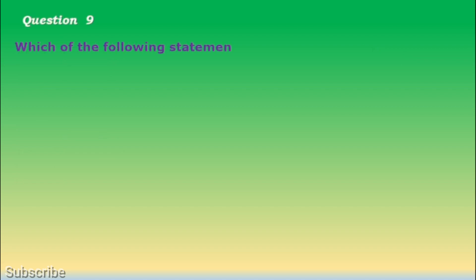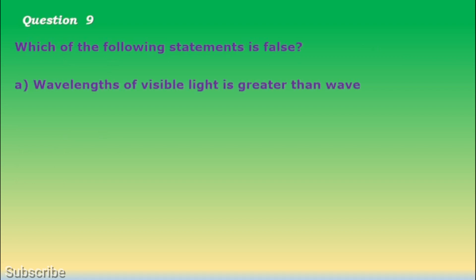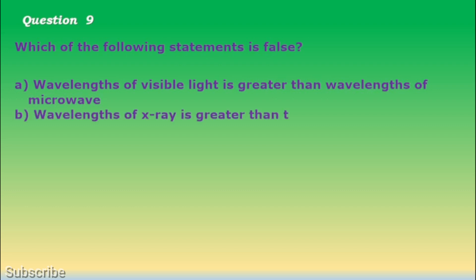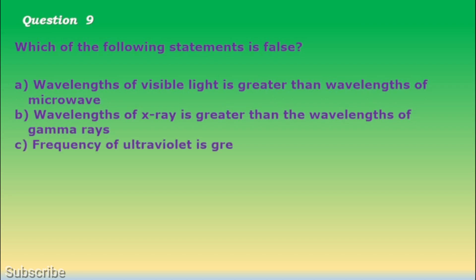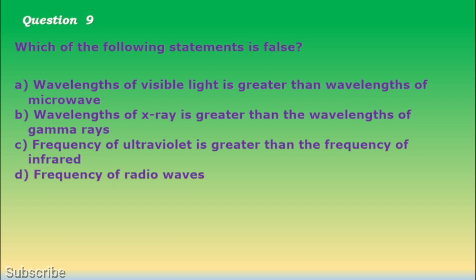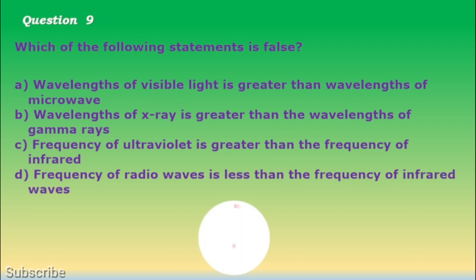Question number 9. Which of the following statements is false? a. Wavelengths of visible light is greater than wavelengths of microwave. b. Wavelengths of x-ray is greater than the wavelengths of gamma rays. c. Frequency of ultraviolet is greater than the frequency of infrared. d. Frequency of radio waves is less than the frequency of infrared waves. The correct answer is letter a. Wavelengths of visible light is greater than wavelengths of microwave.